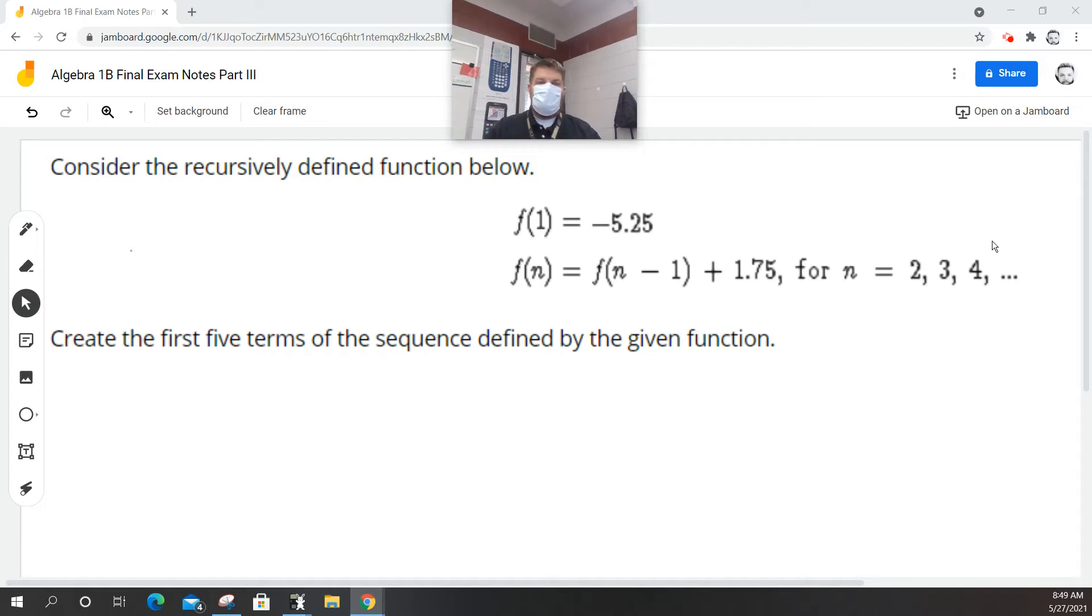So what they're saying is this is an arithmetic series or sequence, and what we're doing is we're just simply adding our common difference. Our common difference is we're going to add 1.75 to the previous term.